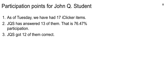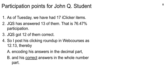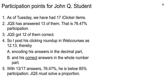His roundup score in WebCourses is 12.13, encoding 13 answers in the decimal part and 12 correct answers in the whole number part. With 13 out of 17, he's below 85%, so he's got to solve a proportion. If you're above 85% or exactly at 85%, just pencil yourself in as 25 out of 25. But if you're less than that, you've got to do this proportion — it's in the syllabus.